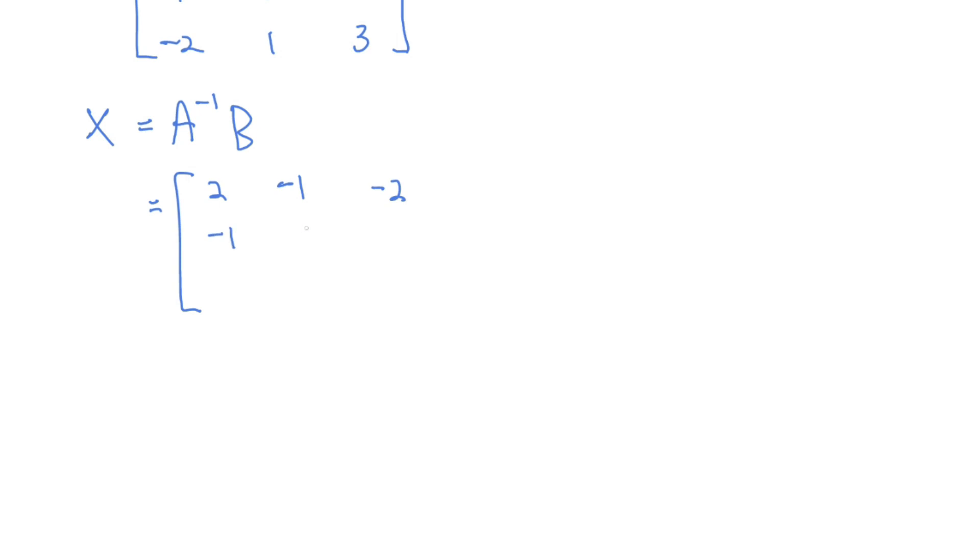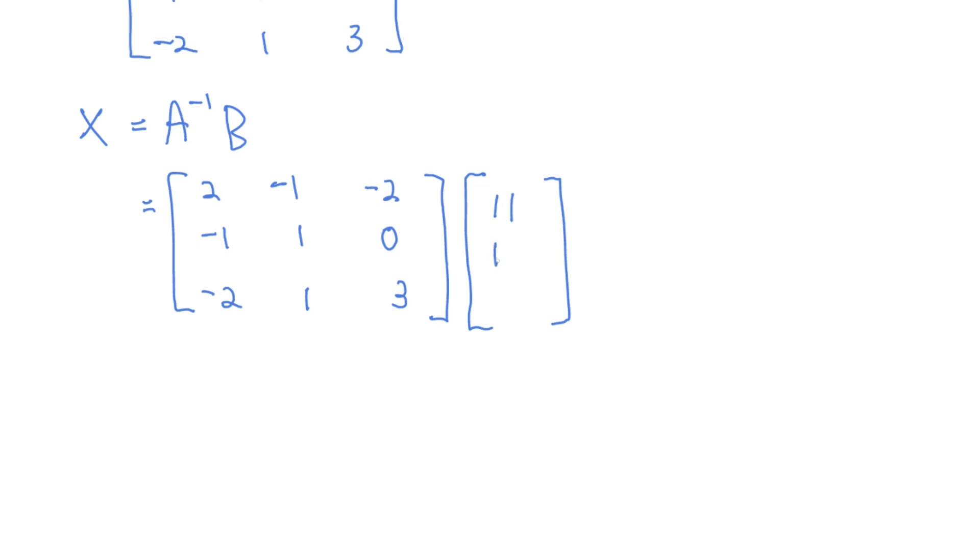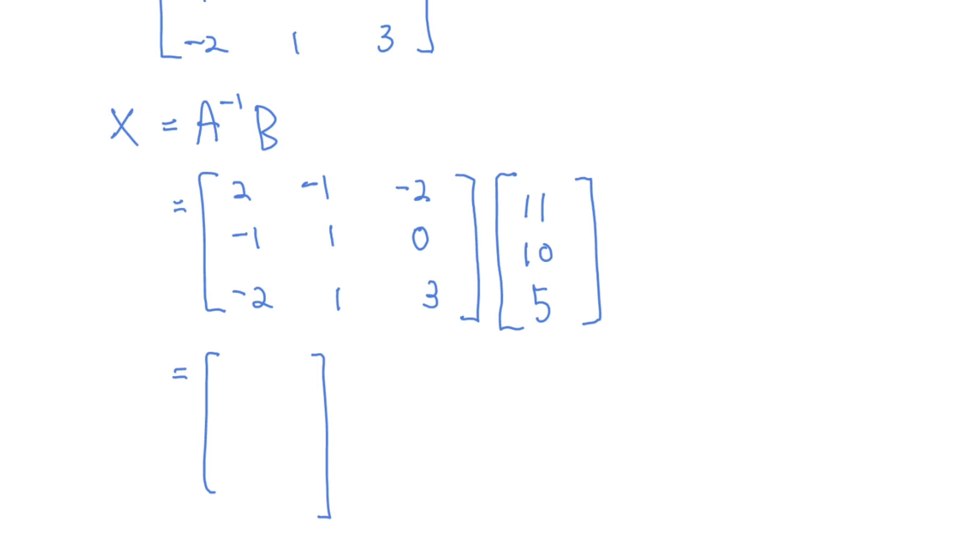B is eleven, ten, and five. By using your knowledge of multiplying two matrices, you will get the final answer here: two, negative one, and three.